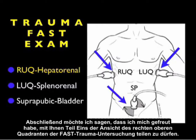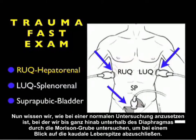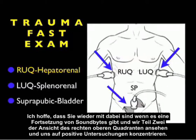In conclusion, I'm glad I could share with you part one of the right upper quadrant view of the trauma FAST exam. We now know how to recognize a normal examination looking from the area below the diaphragm through Morrison's pouch, terminating at a view of the caudal tip of the liver. I hope to see you back as SoundBytes continues and we look at part two of the right upper quadrant view, focusing on positive examinations.